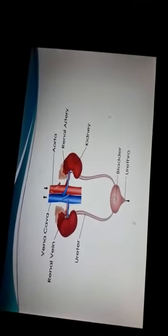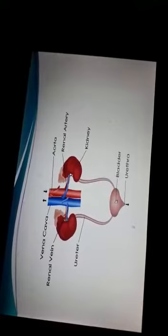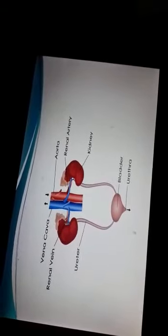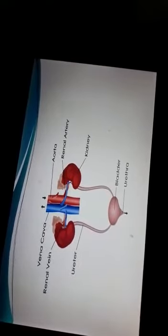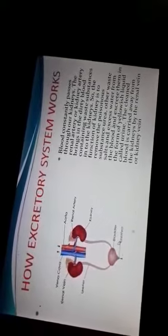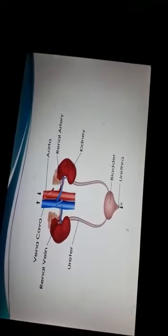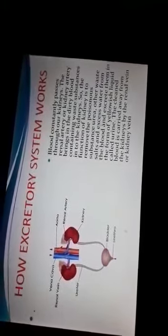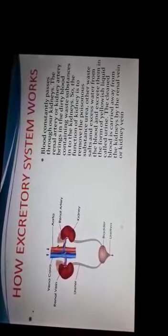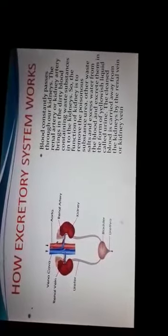Then this bag, this sac-like structure you can see, is called the urinary bladder. The function of the urinary bladder is to store urine. And this small tube you can see here is called the urethra. This is the opening through which urine is expelled out of the body.